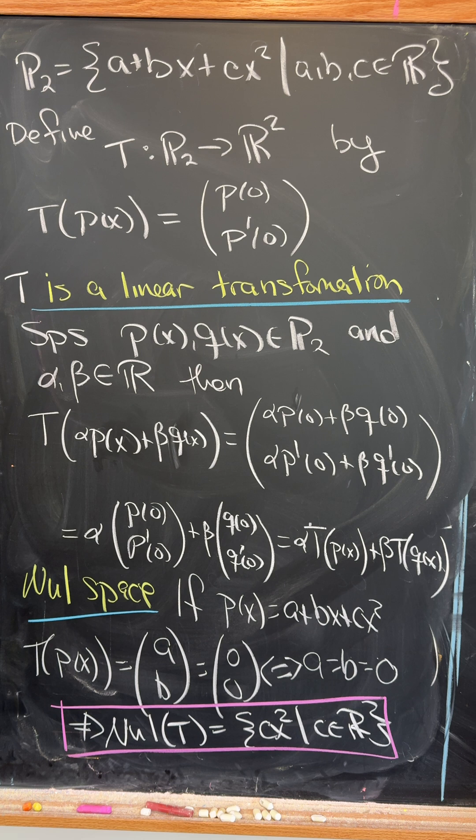Now let's calculate the null space. So let's take p(x) to be a plus bx plus cx squared and observe that if we evaluate